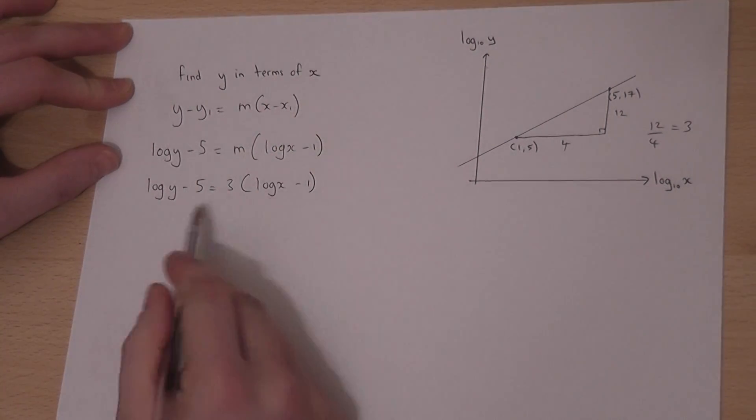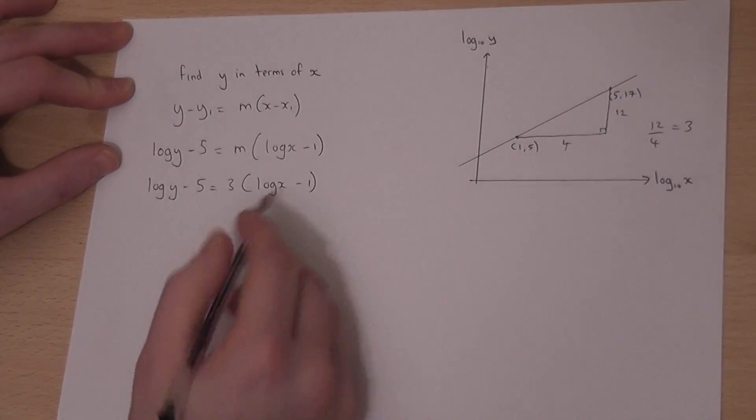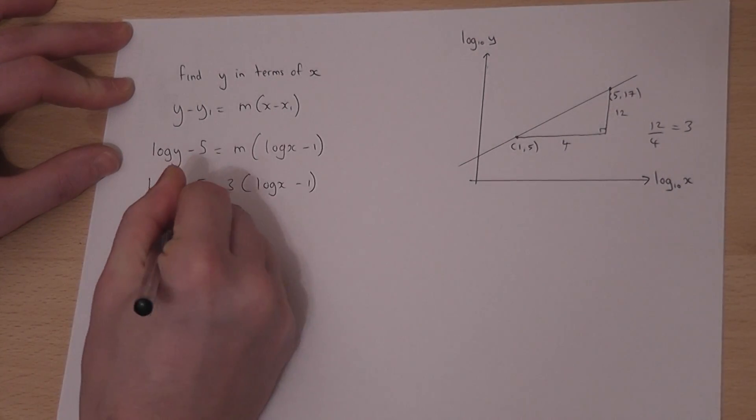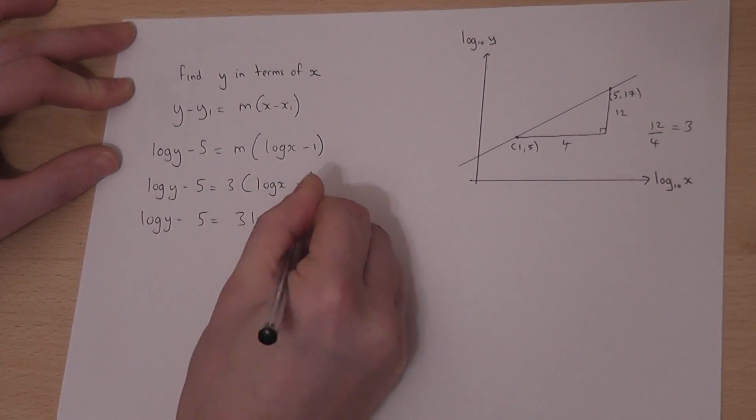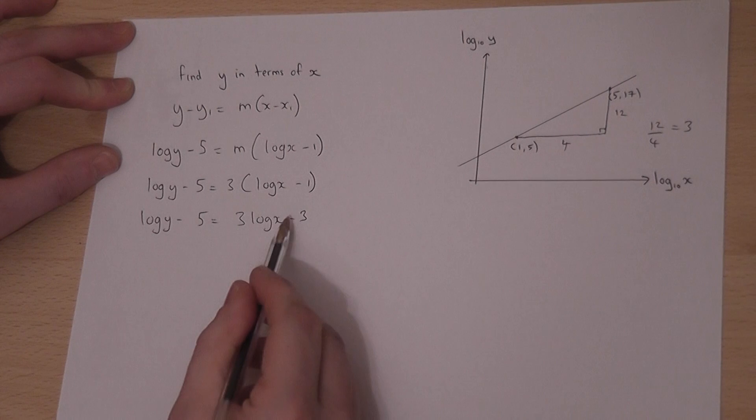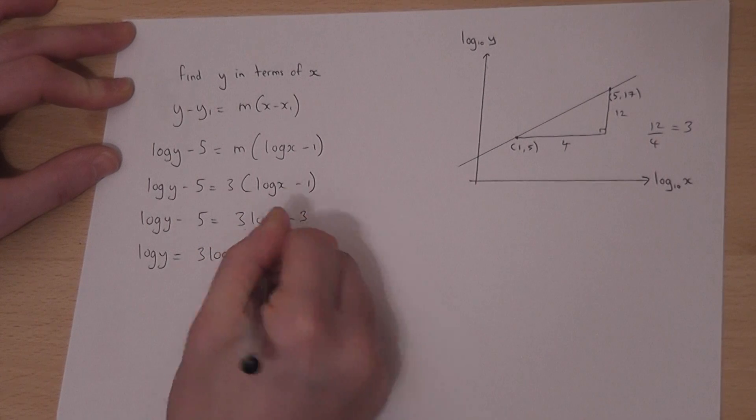The first step is just to rearrange this into the form log y equals. So, I'll expand the bracket. 3 log x take away 3. I'll then add 5 across. So, 3 log x plus 2.